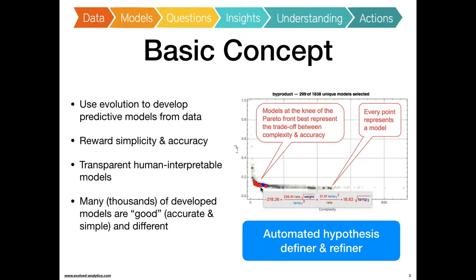But furthermore, in this process, we're going to look at, we're going to develop lots and lots of models, but we really want the ones at this location where it's the knee of the Pareto front, the best trade-off between complexity and accuracy. And we're still going to get hundreds or thousands of models there. And they're all good, they're all simple, they're all accurate. A lot of benefits to this. You can view this as essentially an automated hypothesis generator and refiner.